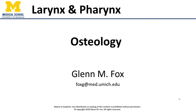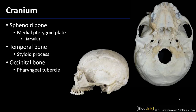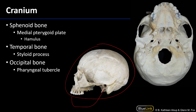Let's talk about the osteology of the larynx and pharynx. The skull consists of two parts: the cranium, which is everything I'm circling here, and below that, articulating with the cranium, would be the mandible.